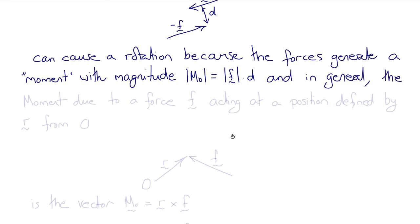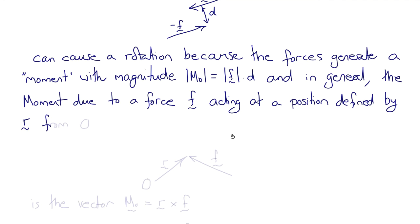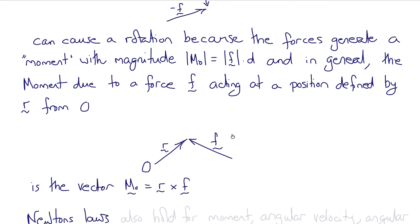And further, in general, the moment due to a force F acting at a position defined by the position vector R from the origin is the vector M₀ equals R cross F. Note that the orientation of the moment vector is the axis about which, in a right-handed sense, the moments act to create rotation.